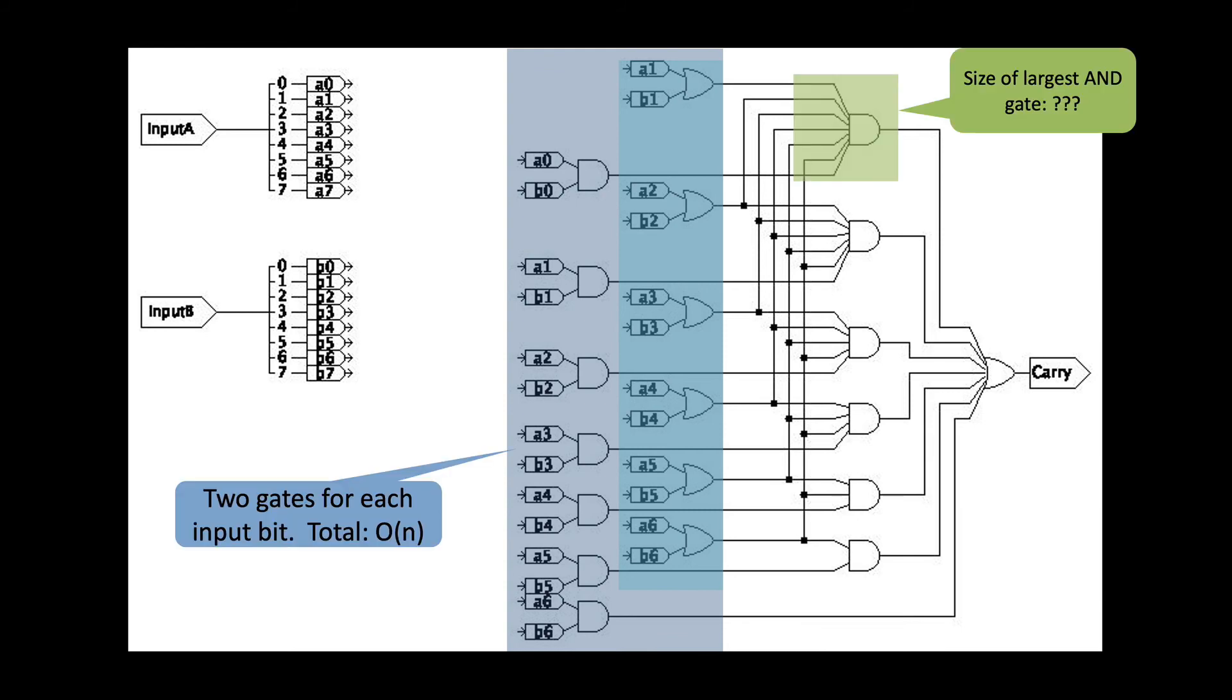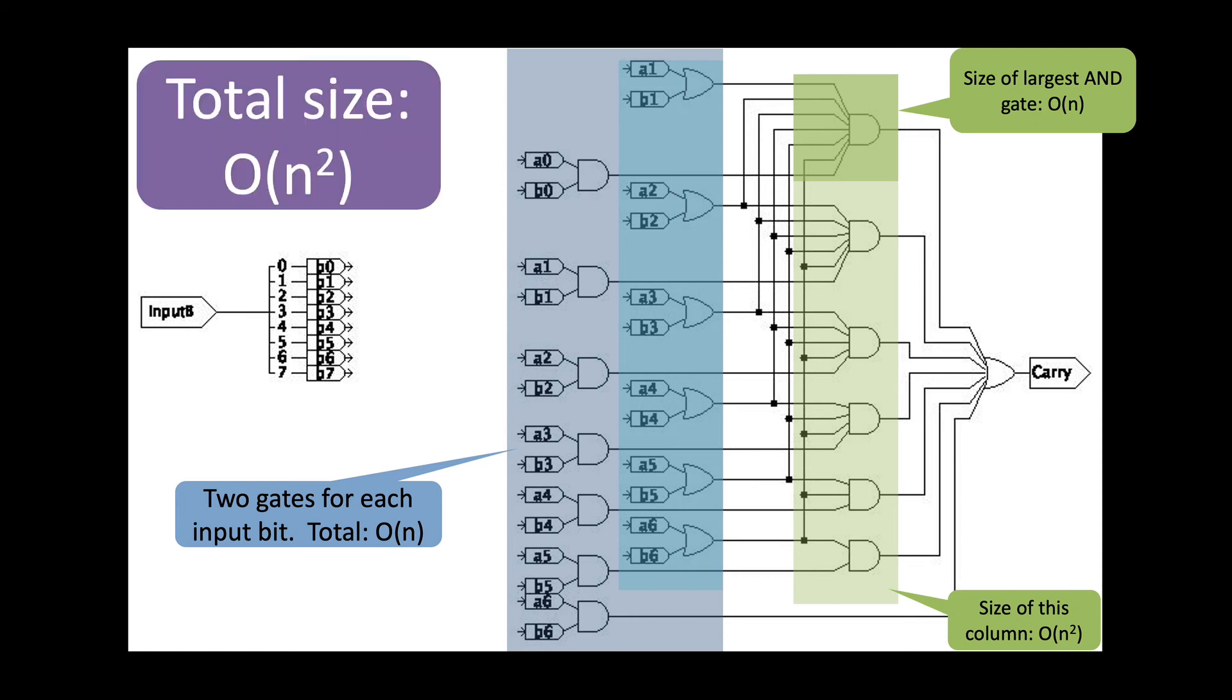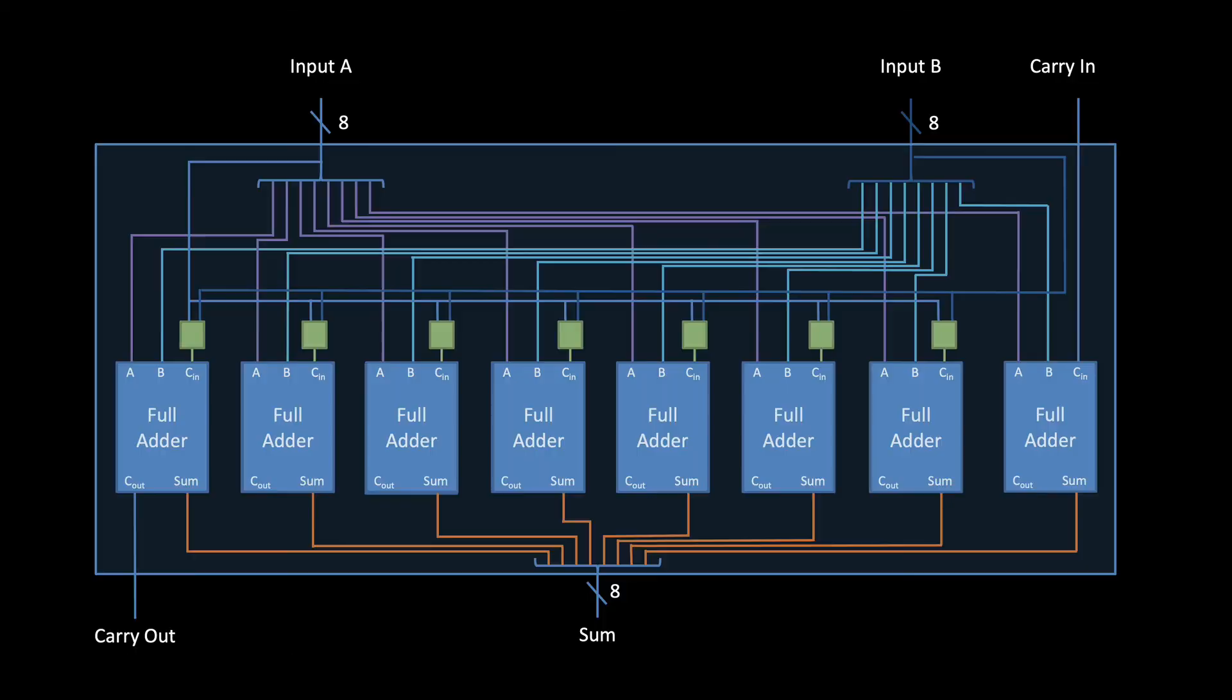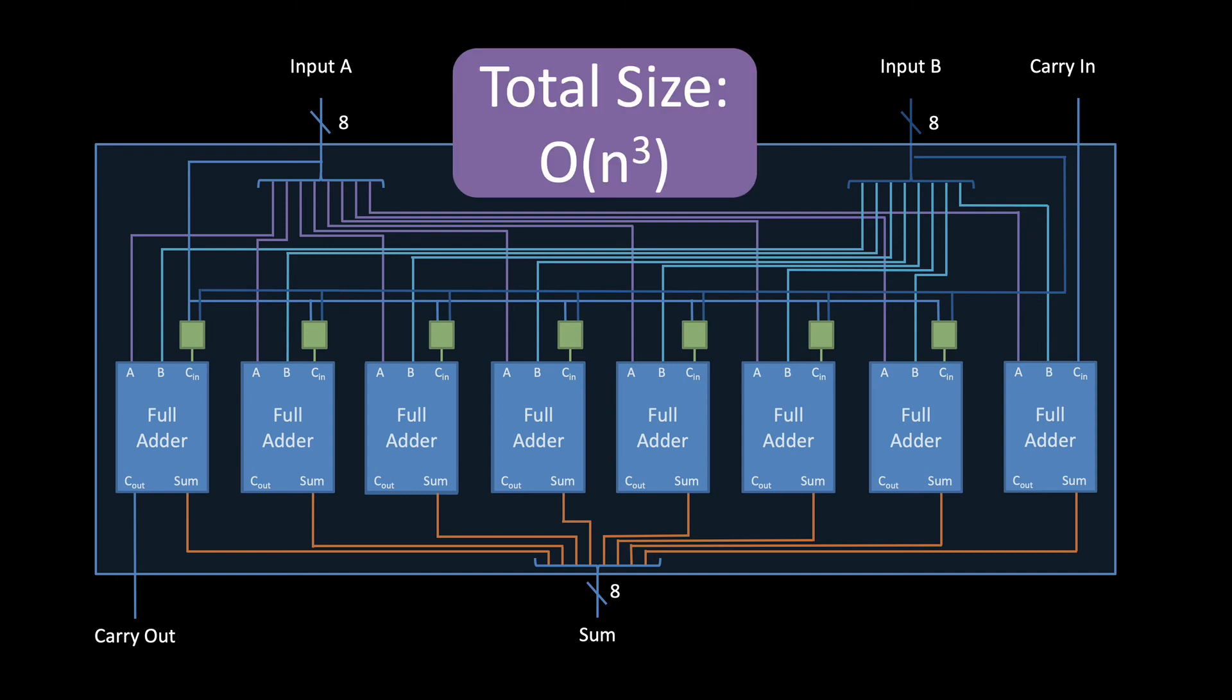The largest AND gate in the largest carry-in block has big O of N inputs. Video 14 shows us then that if we build this out of two input gates as a tree, its size is big O of N. Now, there are big O of N gates in this group, so when we combine those two, we get a total size of big O of N squared, giving a total size for this sub-circuit that's big O of N squared. Now, since there are N of these carry-in sub-circuits, each of which is big O of N squared, we get a total size of big O of N cubed.